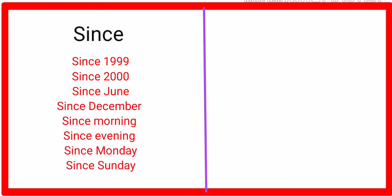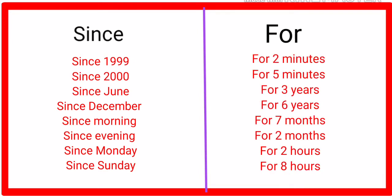Here is the formula for 'since' and 'for'. Examples with 'since': since 1999, since 2000, since June, since December, since morning, since evening, since Monday, since Sunday. Names of days and months are specific time, that's why we use 'since' with them. Examples with 'for' — duration of time: for two minutes, for five minutes, for three years, for six years, for seven months, for two months, for two hours, for eight hours.